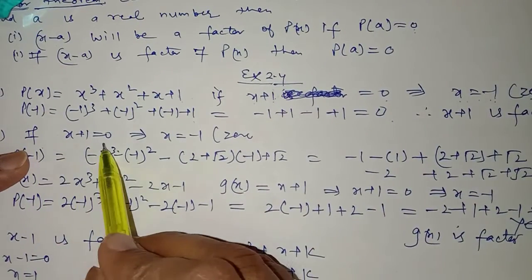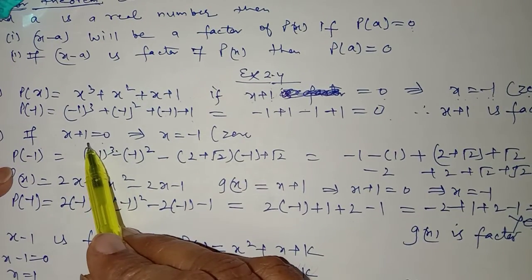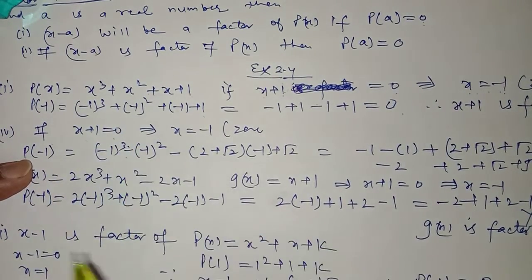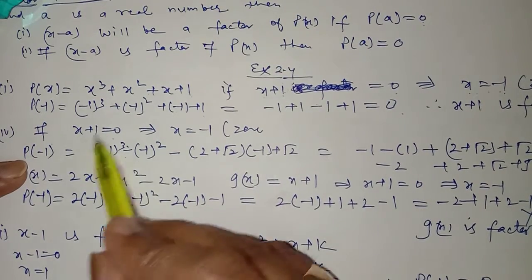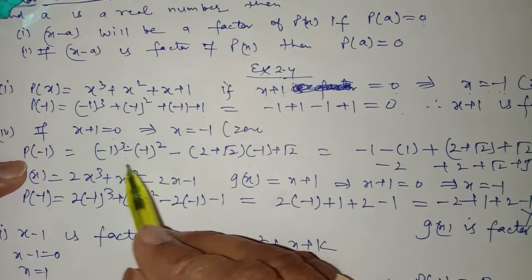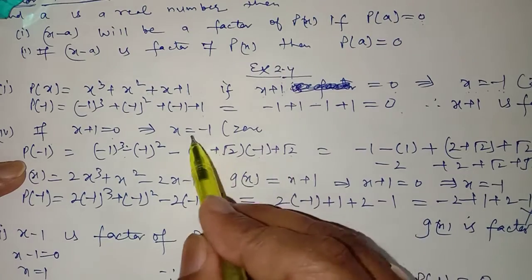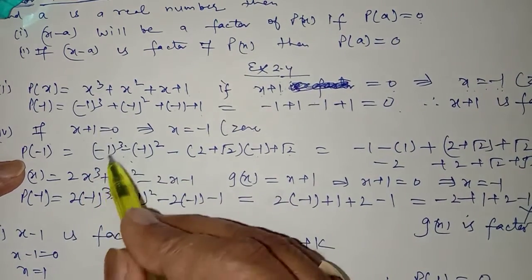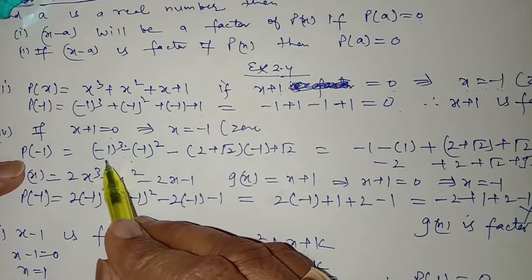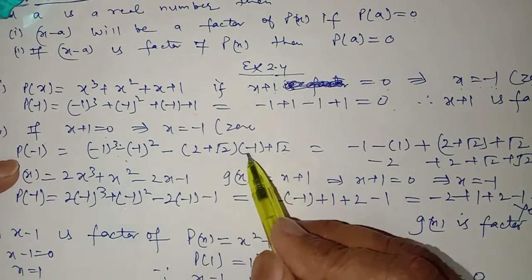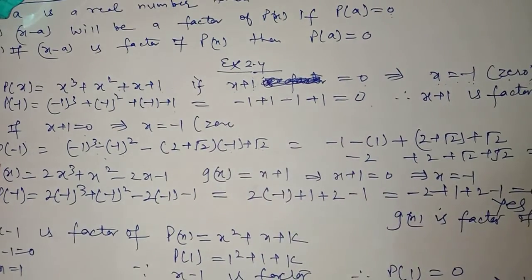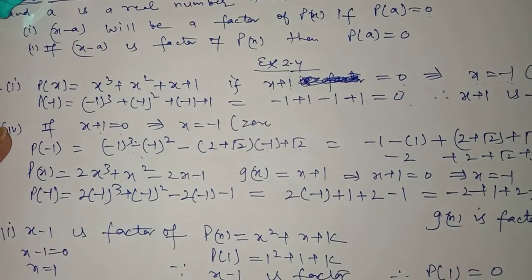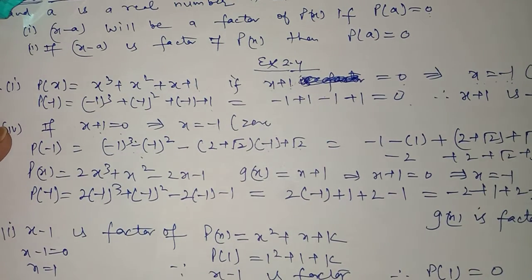Similarly, check whether (x + 1) is a factor of the fourth part polynomial: −x² − 2 + √2·x + 2. Put x + 1 = 0, so x = −1. Replace x by −1 in the polynomial: (−1)³ − (−1)² · 2 + √2·(−1) + 2. On simplifying we get 2√2. Because the remainder is not 0, we conclude that (x + 1) is NOT a factor of the given polynomial. You can try the remaining parts yourself.